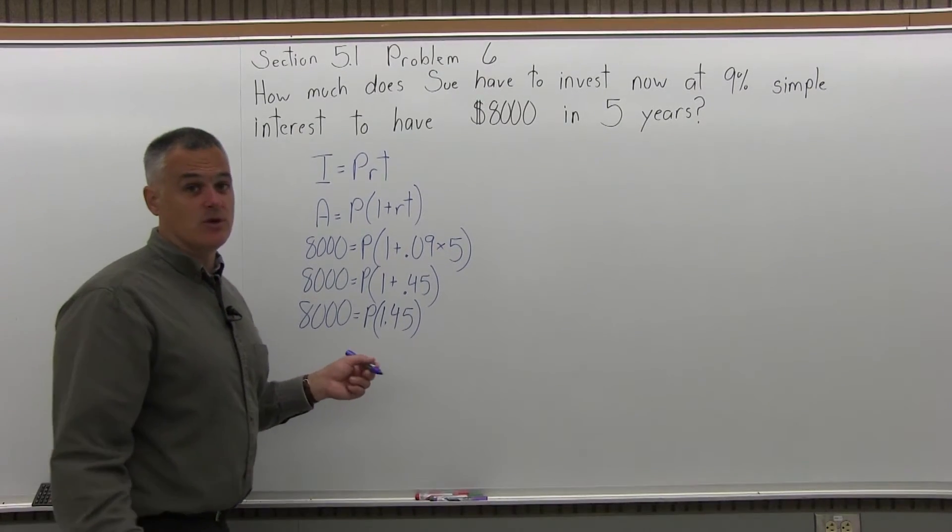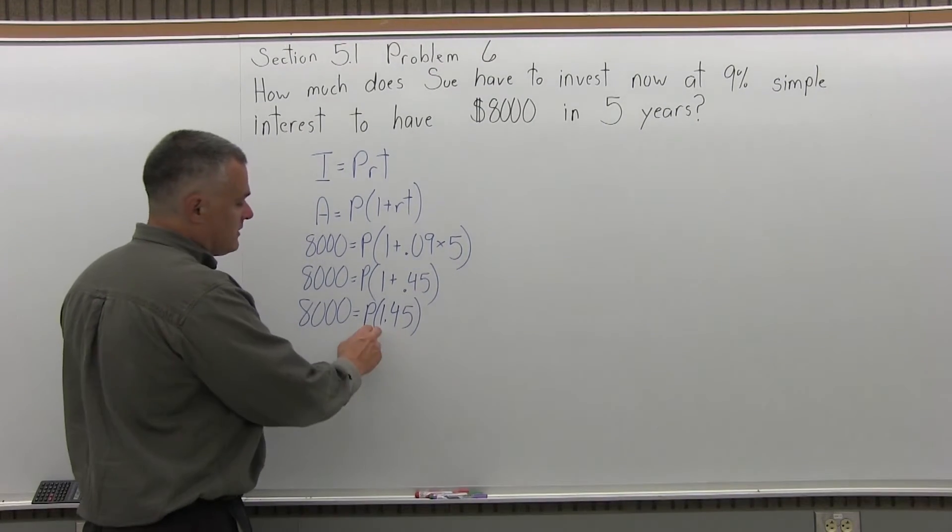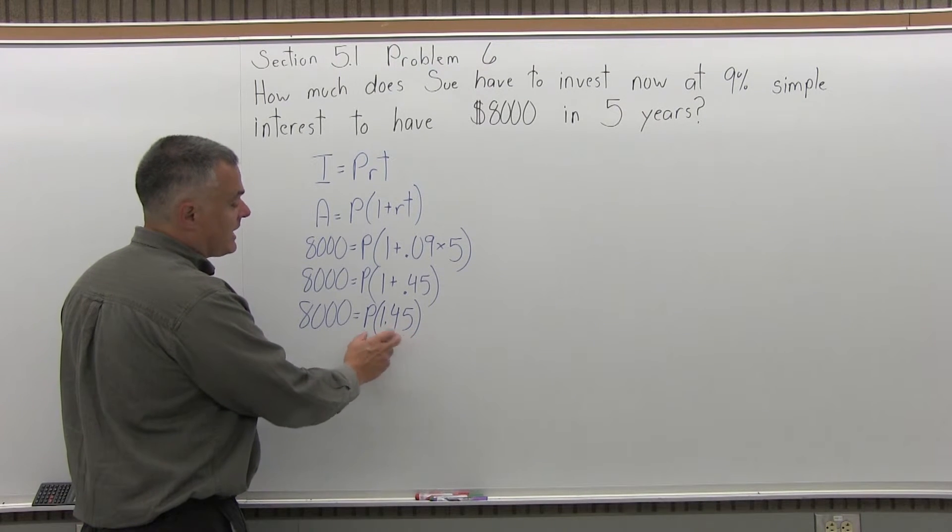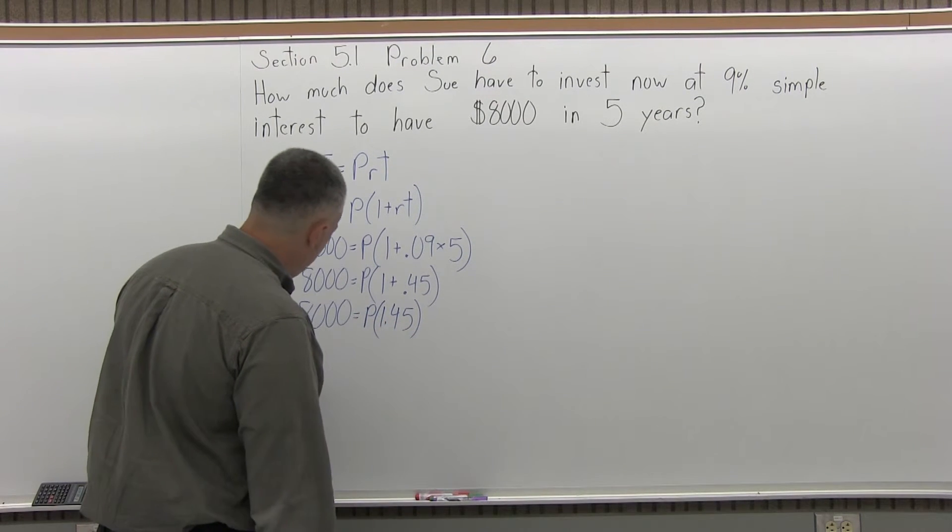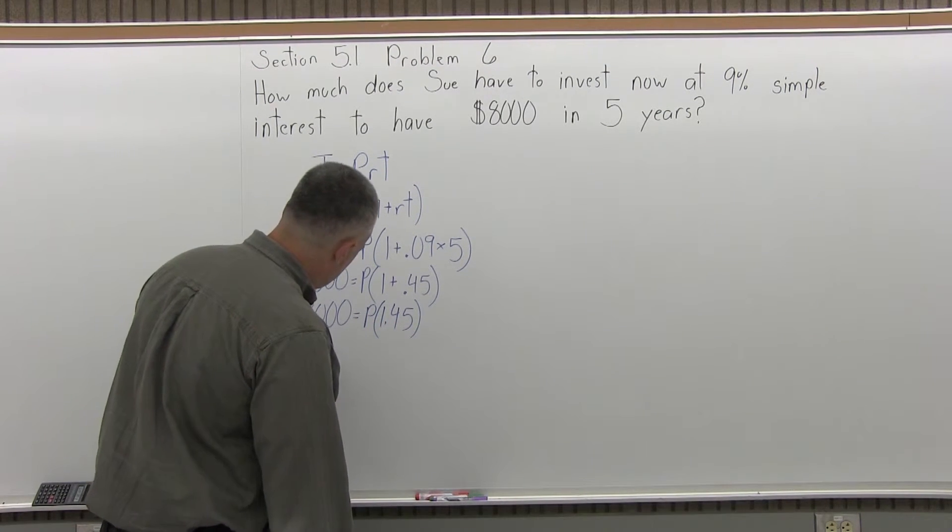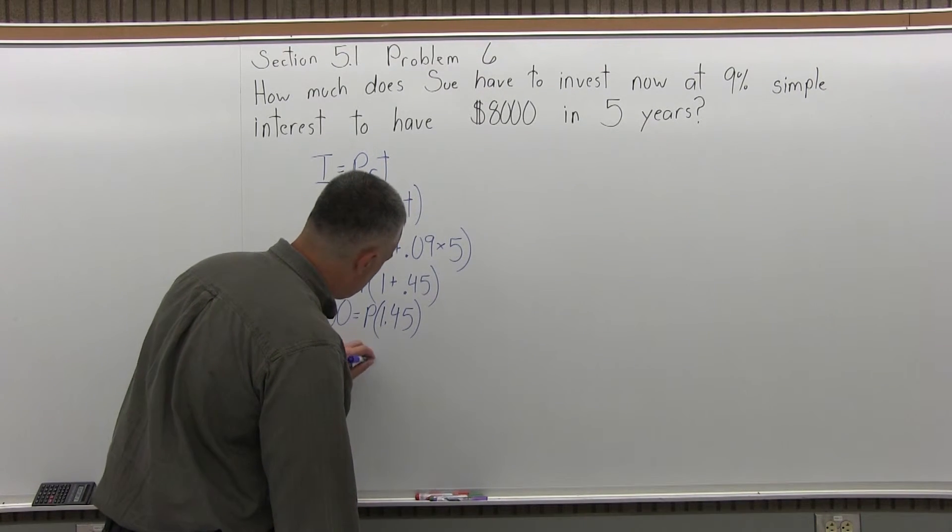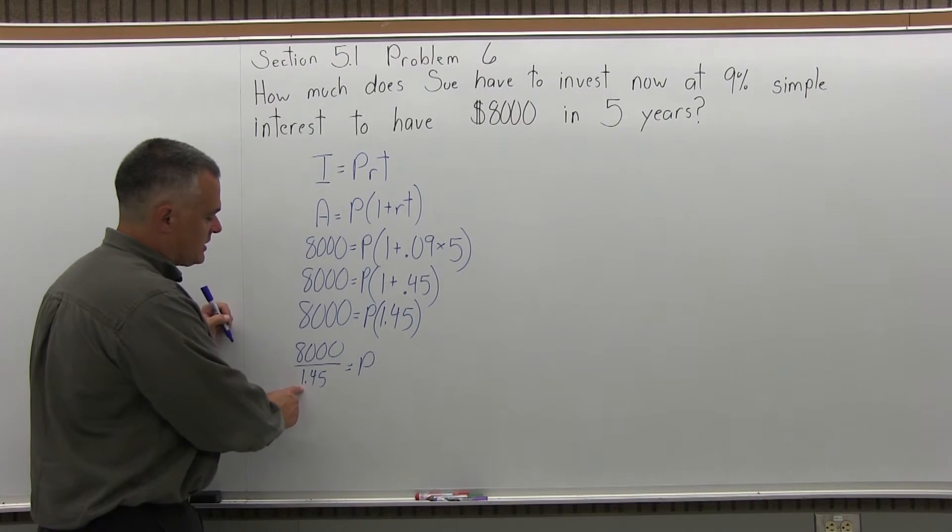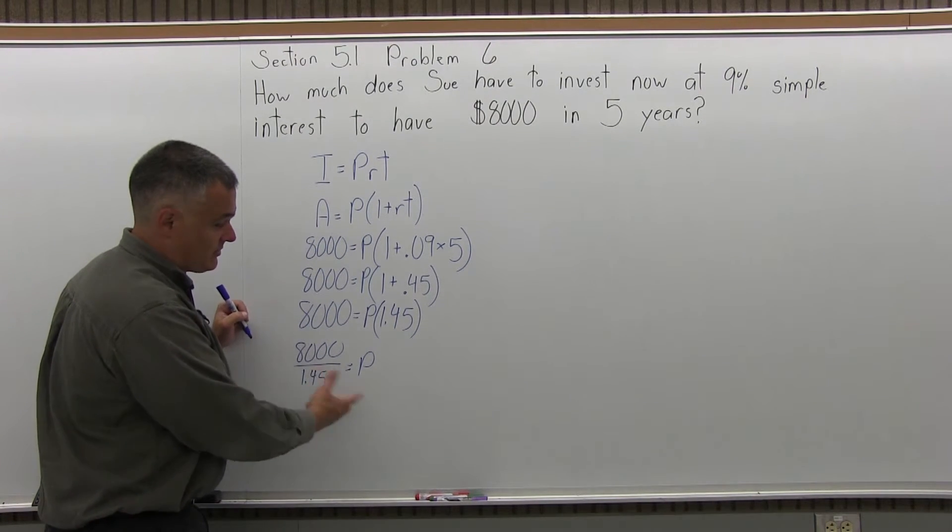Now to get the P by itself, which is your goal, you want to know the principle. You need to divide away the 1.45 that's multiplied times the P. So we have 8,000 divided by 1.45 equals P. Now that's not a division that I can possibly do in my head.